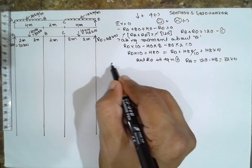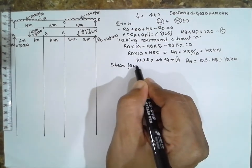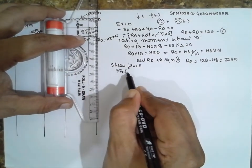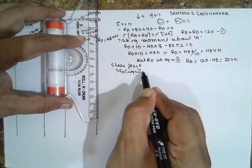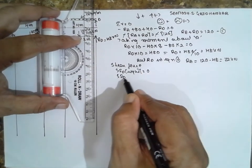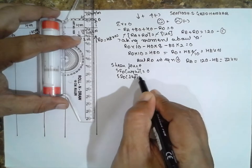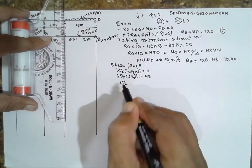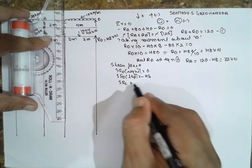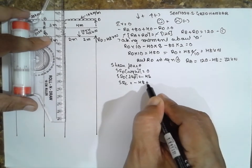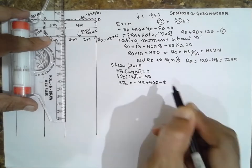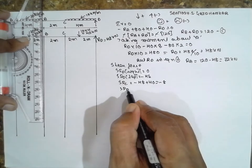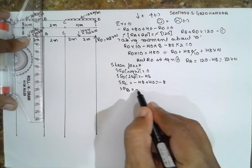Now go for shear force diagram. I will start from the right side. At D on right it will be 0, on left SFD on left minus 48. At C there is single letter C because there is no load, minus 48, minus 48 plus 40 equals minus 8. At B, single letter, the previous value.